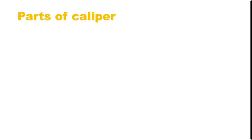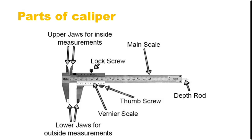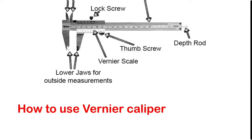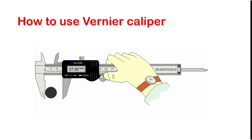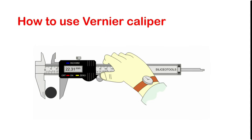The next topic is: what are the parts of a caliper? These are the different parts of a caliper, and the important ones we need to use in our calculation are the main scale reading and the vernier scale reading. How to use vernier caliper? This is the way how we should use it.